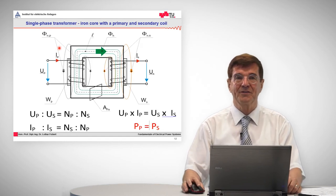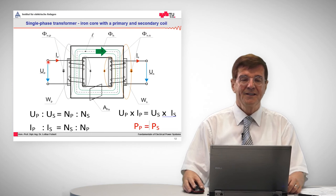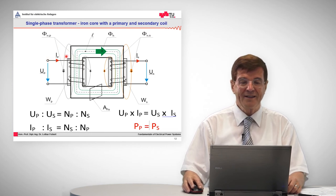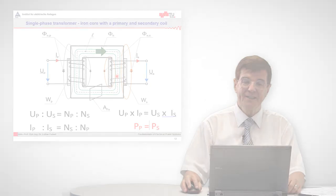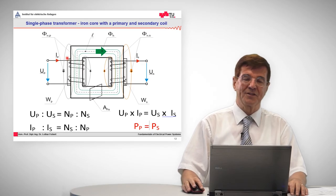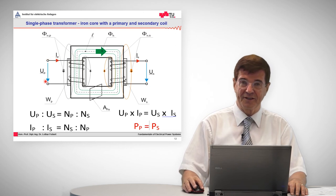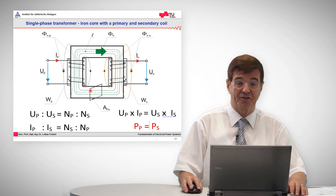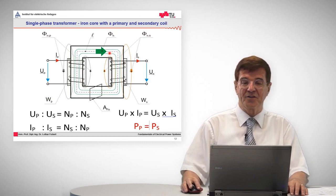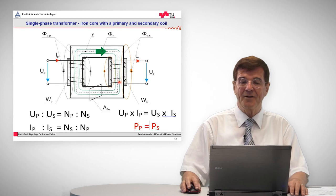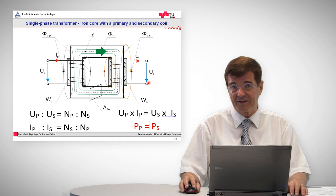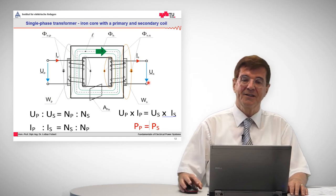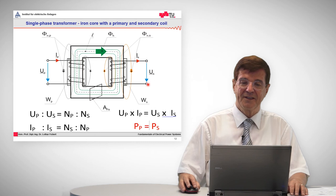The last element we want to talk about is the transformer. The transformer has two windings, one on the so-called primary side, another one at the secondary side. If you apply at the transformer at the primary side a voltage, you generate a flux which is related to the voltage according to the induction law. This flux goes through another winding and in this winding we generate a secondary voltage which in turn, if we connect a resistor to it, will allow a current to flow.